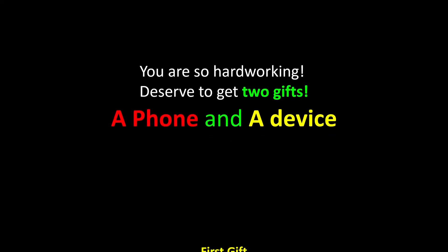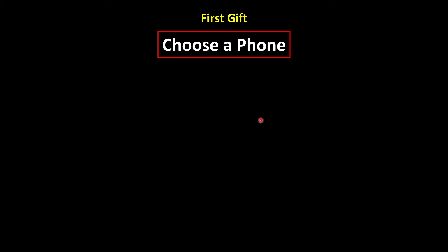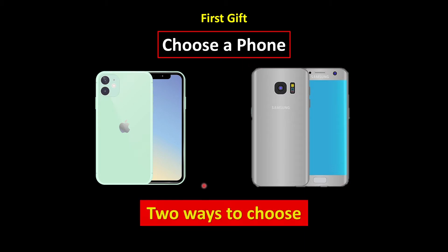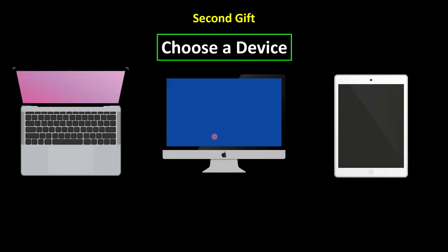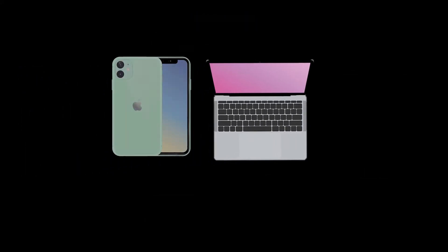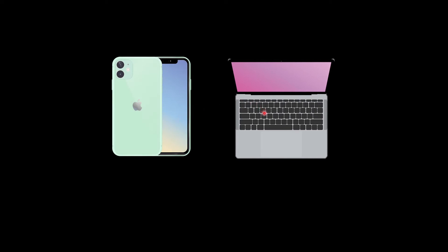You are so hardworking that you deserve to get two gifts from your parents: a phone and a device. Now we're going to pick your phone — you have two choices: an iPhone or a Samsung. Choosing a phone is considered one event, so we have two ways to choose a phone. Let's say you prefer an iPhone. Now for the second gift, choosing a device: either a laptop, a PC, or a tablet — so we have three ways to choose your device. You pick a laptop, so you eventually chose an iPhone and a laptop.